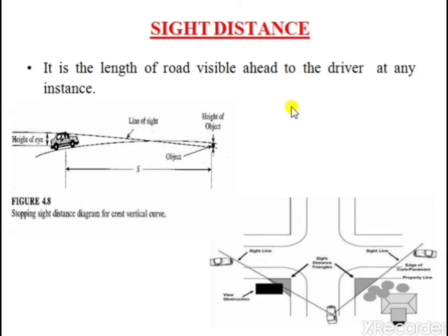Sight distance available at any location of a carriageway is the actual distance a driver, with his eye level at a specified height above the pavement surface, has visibility of any stationary or moving object of specific height. So here sight distance has some restrictions.